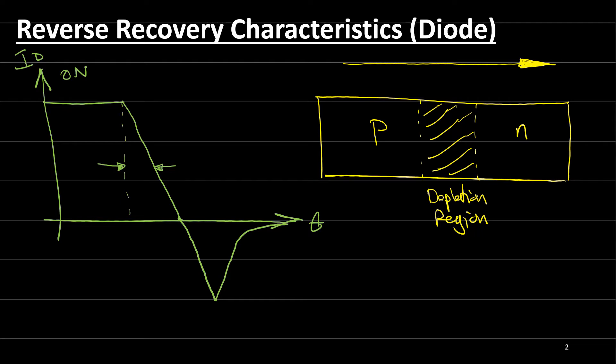The total recovery time is defined from this point, when the current hit the zero line, to approximately 25 percent of the peak current in the opposite direction.